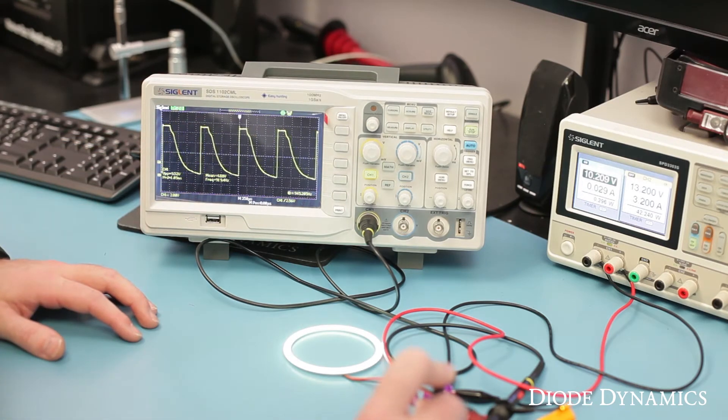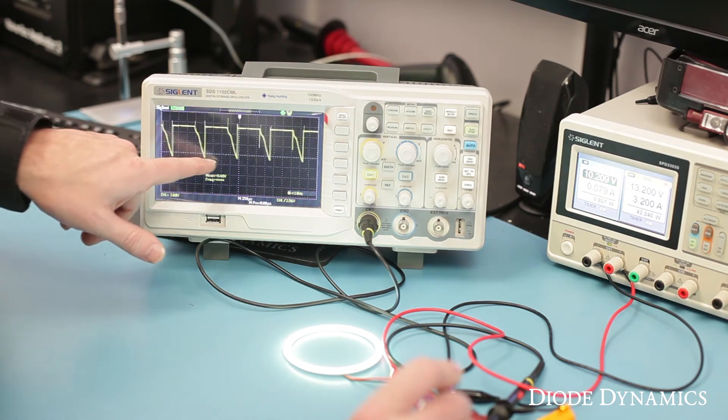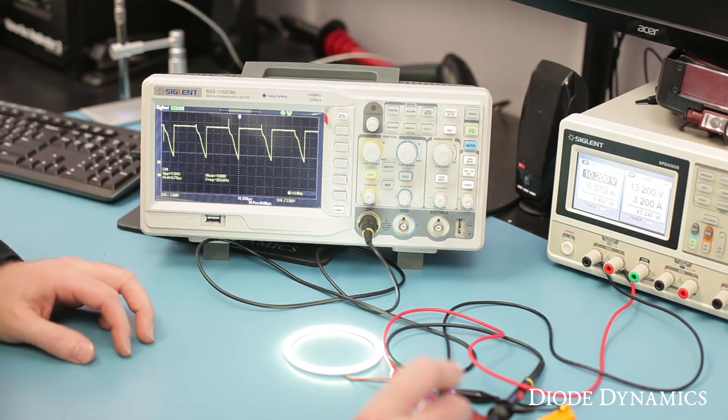When we increase the brightness, you can see that the on time increases and the off time decreases. We've modulated or changed the width of the pulse of power. Pulse Width Modulation.